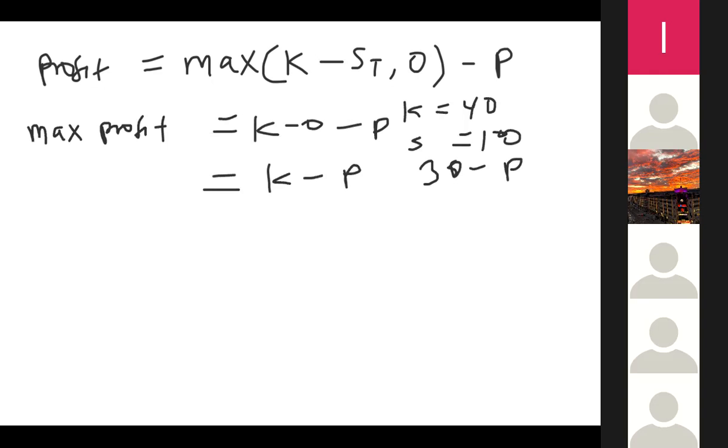And then the maximum loss that you can also make, the maximum loss that you can also make is P. Because when the price rises, I bet the person has not exercised it, right? So that means your maximum loss is the P.